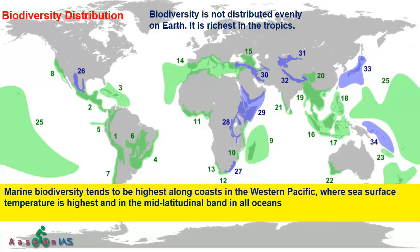If you talk about marine biodiversity, it is highest in the western Pacific where sea surface temperature is highest. Also, in mid-latitudinal belts in all oceans, marine biodiversity is higher. So marine biodiversity is also not evenly distributed.